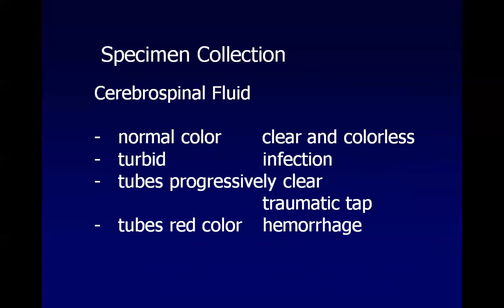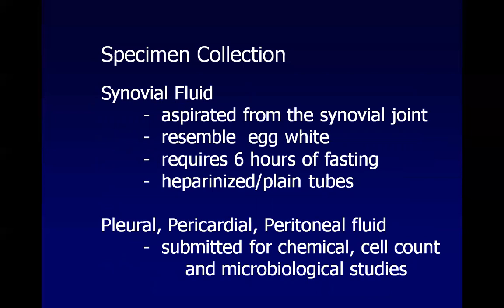Normal CSF is clear and colorless because it is acellular. Turbid CSF indicates infection. If the first tube is red and becomes progressively clear, it indicates a traumatic tap; if all three tubes are constantly red, it indicates interventricular hemorrhage. Synovial fluid is aspirated from synovial joints, resembles egg white, requires six hours of fasting, and uses heparinized or plain tubes. Pleural, pericardial, and peritoneal fluids are submitted in three tubes similar to CSF.